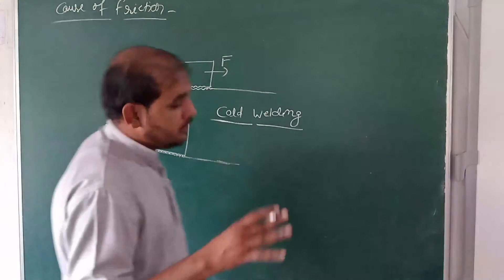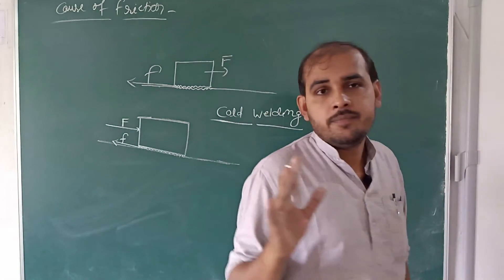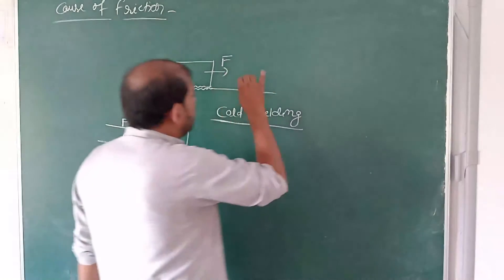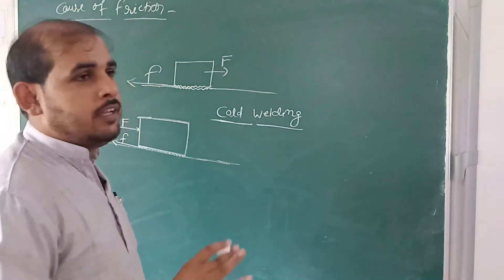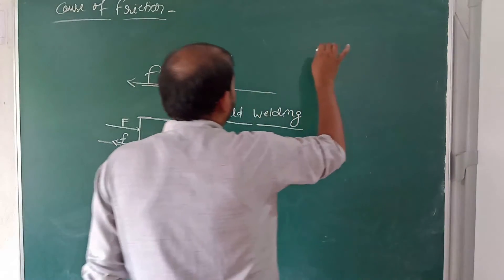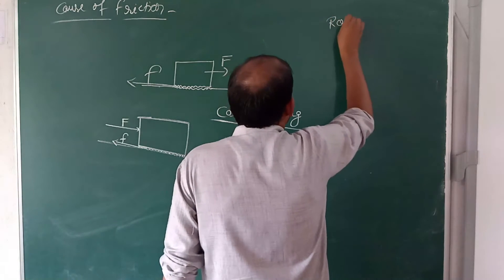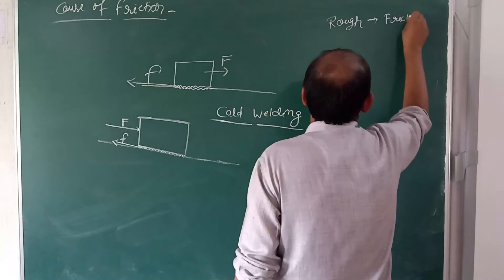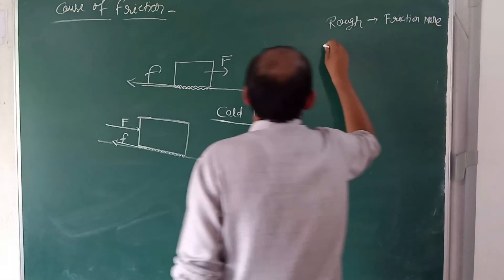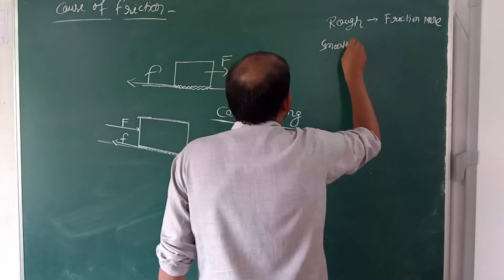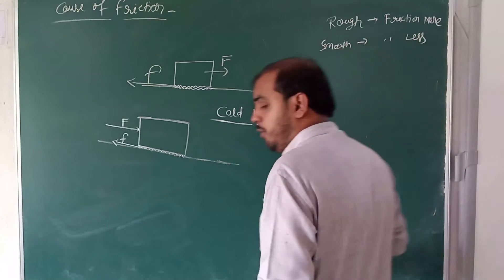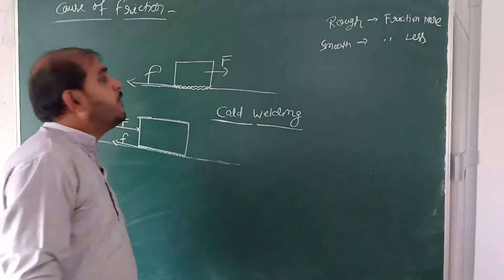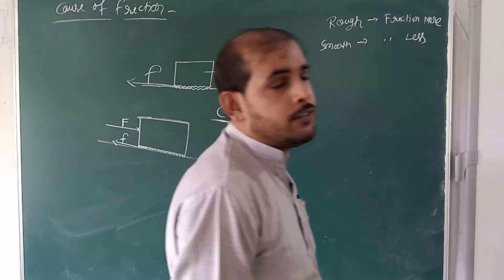So that is the actual cause of friction. Now if you have doubts, let's look at an example. If the surface is rough, then friction will be more. If the surface is smooth, then friction will be less. Roughness plays a role — an important role — in friction. Rough surface means more friction; smooth surface means less friction.